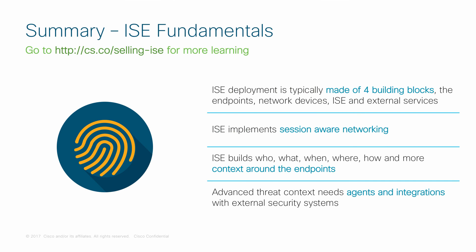To summarize: an ICE deployment is made of four critical components — endpoints, network devices, ICE itself, and external services. It's all about sessions and session IDs, a unique identifier around which session metadata is built in real time. ICE has answers for who, what, when, where, how, and more. Advanced threat contexts like posture, vulnerability, and threats need agents and integrations with external security systems.